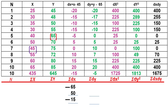For dy values, using assumed mean 65: 45 minus 65 is minus 20; 48 minus 65 is minus 17; 50 minus 65 is minus 15; 55 minus 65 is minus 10; 65 minus 65 is 0; 70 minus 65 is 5; 75 minus 65 is 10; 72 minus 65 is 7; 80 minus 65 is 15; 85 minus 65 is 20. Sigma dy equals minus 5.